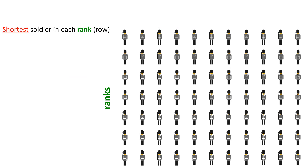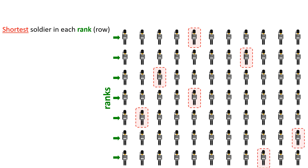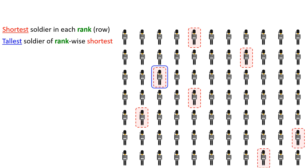Let's pick the shortest soldier in each rank: one, two, three, four, five, six, and seven. Now let's pick the tallest soldier of the rank-wise shortest — coded in blue — but remember that that soldier is still the shortest in his own rank.